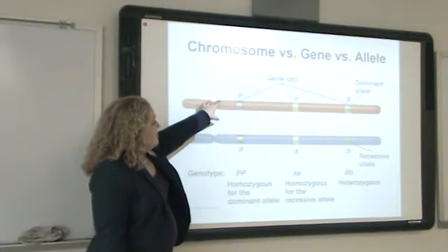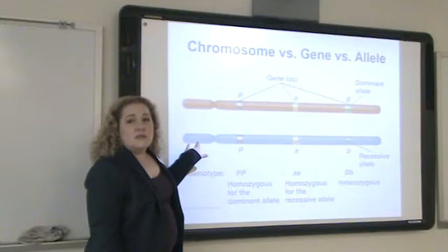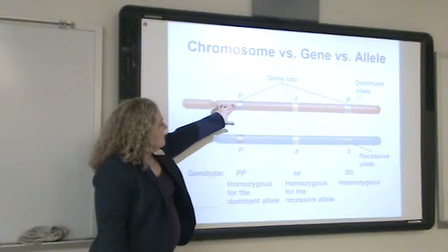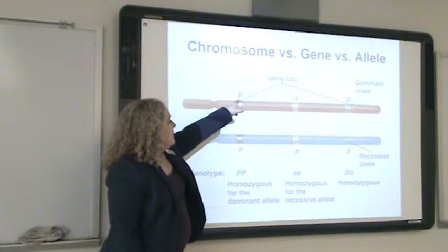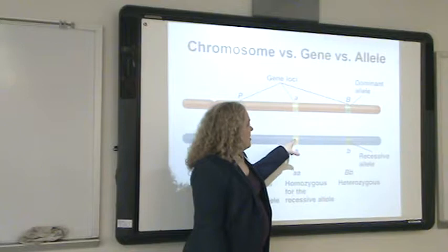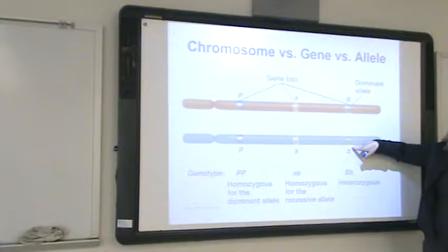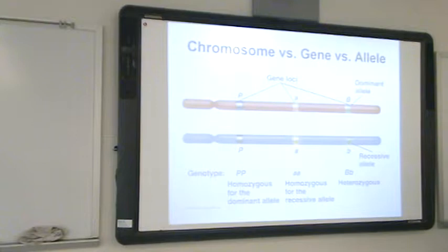This chromosome is showing three genes. The same position on each version of the chromosome has an equivalent gene. They're calling them big P and big P on one pair, small a and small a on another, but these two genes have different letters — big B and little b. That's referring to alleles. I want you to write some definitions from the board in the blank slide in your packet.